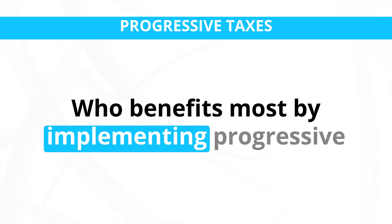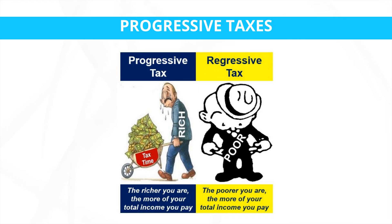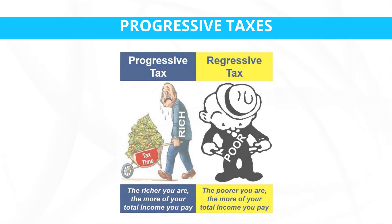The primary beneficiaries of implementing progressive taxes are low-income and marginalized individuals and families. As the tax revenue collected from higher-income individuals and corporations is directed towards poverty alleviation programs and social services, those living in poverty can access essential resources and opportunities that improve their living conditions and economic prospects. Additionally, progressive taxes can create a more equitable society by reducing the income gap between the rich and the poor.